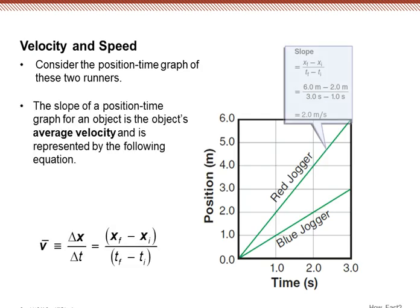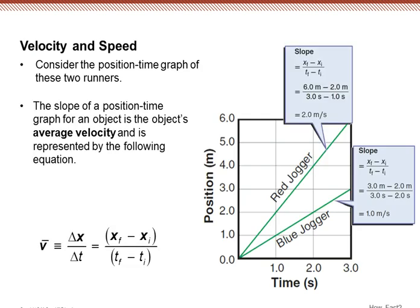First, let's consider a position-versus-time graph, where we have a red jogger and a blue jogger. The slope of the position-versus-time graph is the average velocity. That's the object's average velocity. We know slope is rise over run. Well, if it's position-versus-time, the rise is going to be a change in position, that's delta x, and the run is going to be a change in time, that's delta t. That gives us the average velocity.